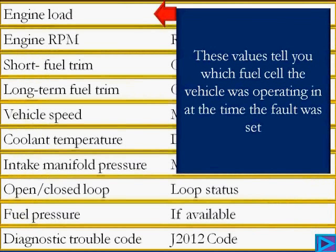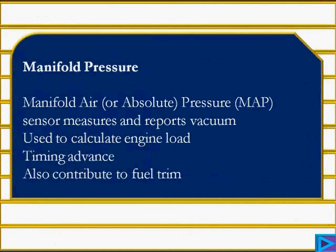These values tell you which fuel cell the vehicle is operating in at the time the fault was set. Manifold absolute pressure sensor measures and reports vacuum — it's really load, but we refer to it as vacuum. It's used to calculate engine load and timing advance, and remember anything that affects timing affects fuel, so it contributes to fuel trim.